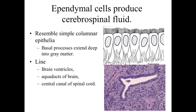The final glial cells within the central nervous system are the ependymal cells, which are involved with producing cerebrospinal fluid. They line the open spaces within the brain — the ventricles, the aqueducts — as well as the central canal of the spinal cord, even though that is often filled in in adults. They appear to be a simple columnar epithelia, with cells that are taller than they are wide.